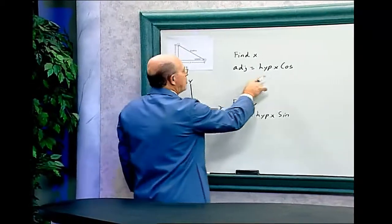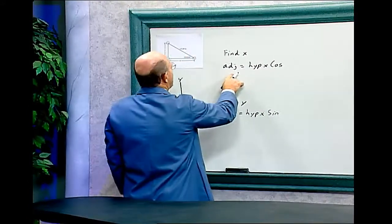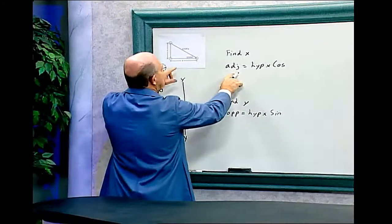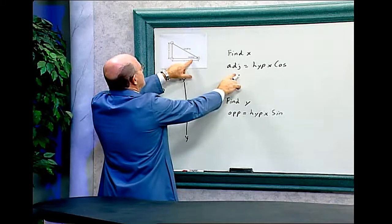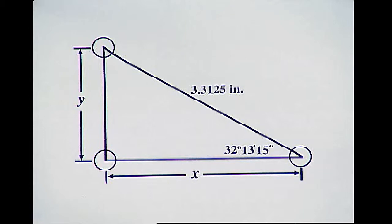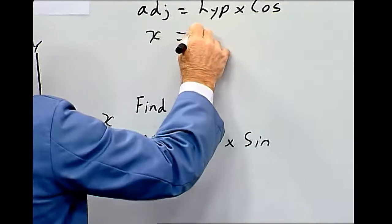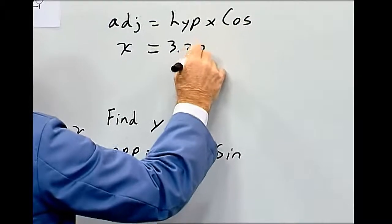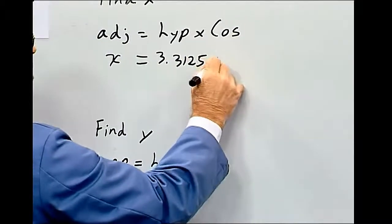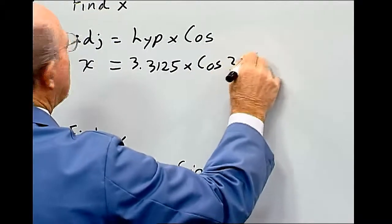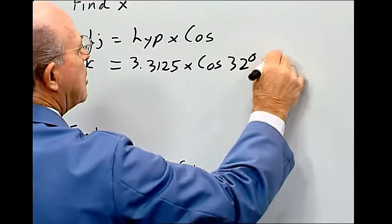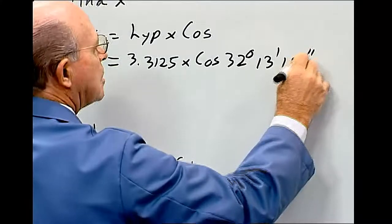And these are the formulas, let's put in the numbers. Adjacent for x. This is the adjacent to this angle over here. Alright, so we want to find this x equals the hypotenuse is 3.3125 times cosine of 32 degrees, 13 minutes and 15 seconds.